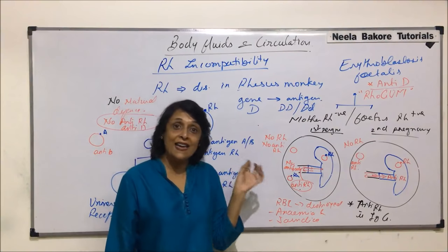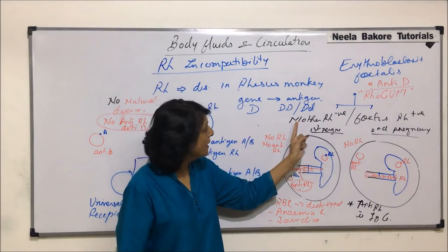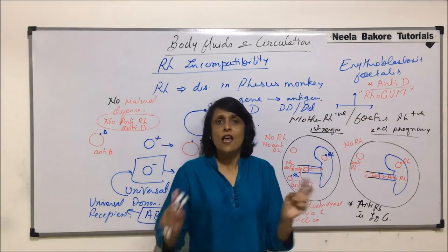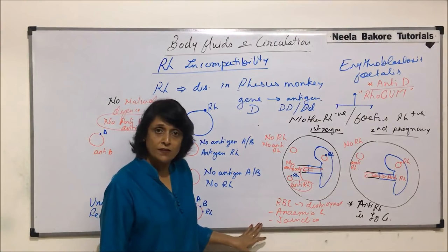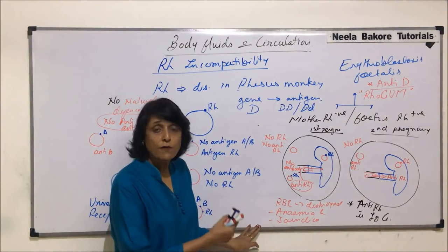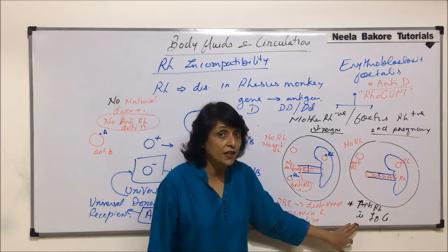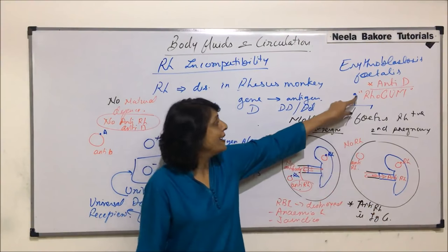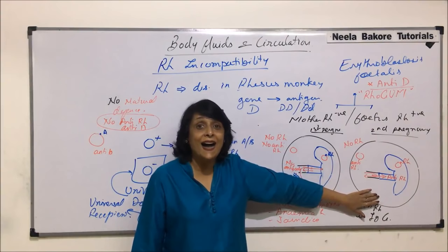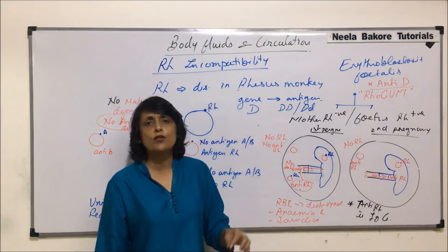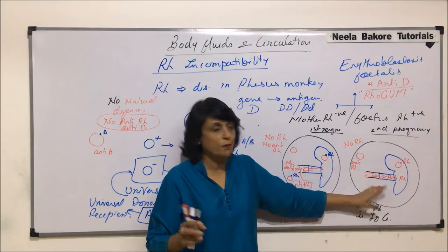Whenever we use the term RH incompatibility, the conditions to remember are: problems occur when the mother is RH negative and the fetus is RH positive. If both are positive, both are negative, or if the reverse situation exists, the problem does not occur. The first baby born may have milder problems — anemia and jaundice. But in consecutive pregnancies, if anti-D is not taken, the second and subsequent fetuses would die at an early age. It can lead to abortions and stillbirths. The survival of the fetus becomes almost impossible because of this complication.